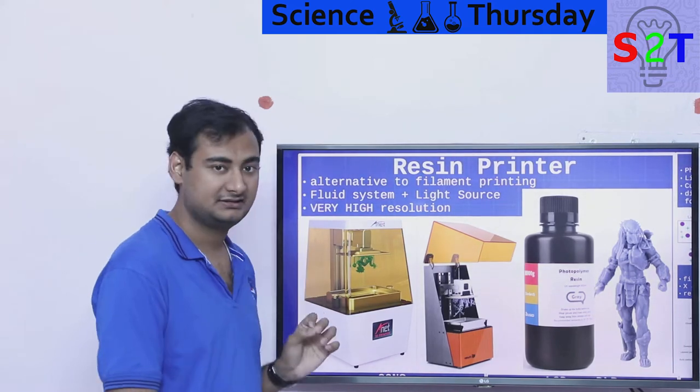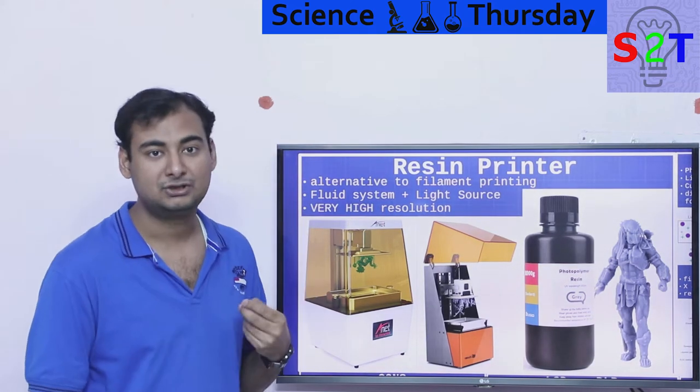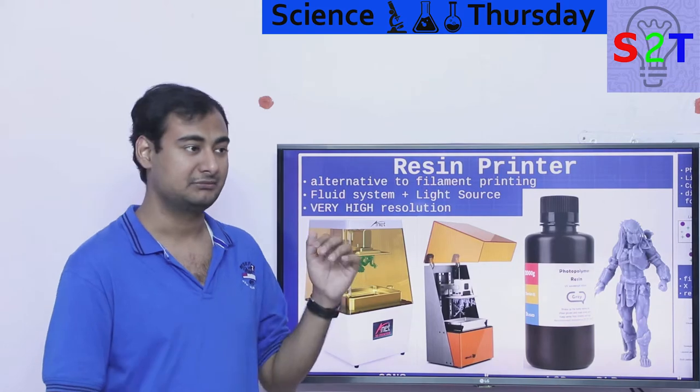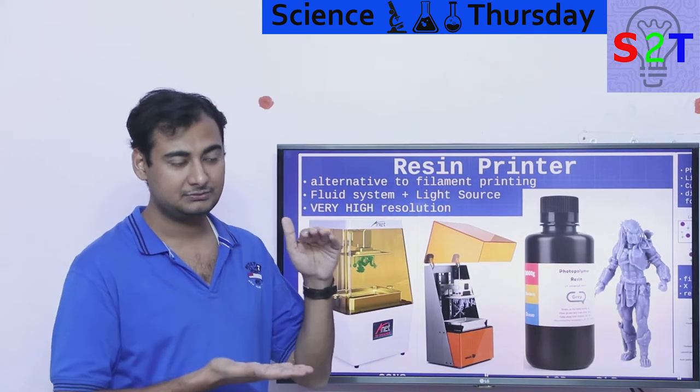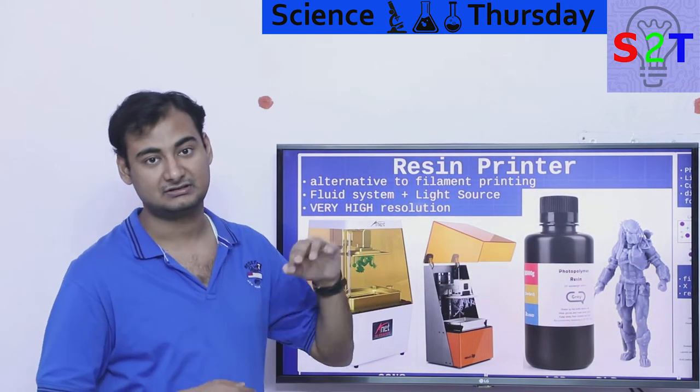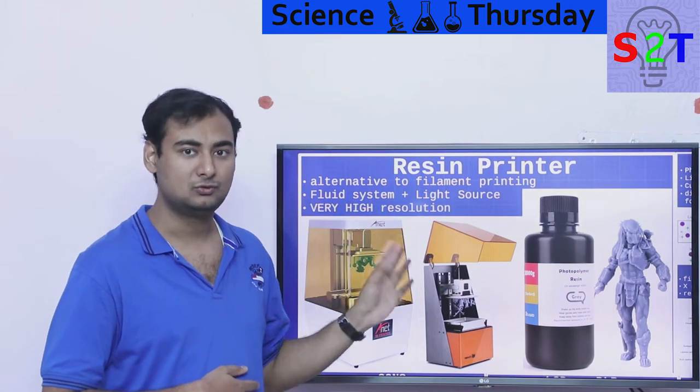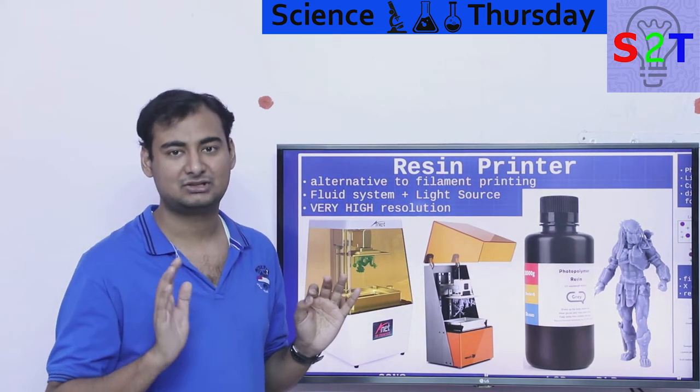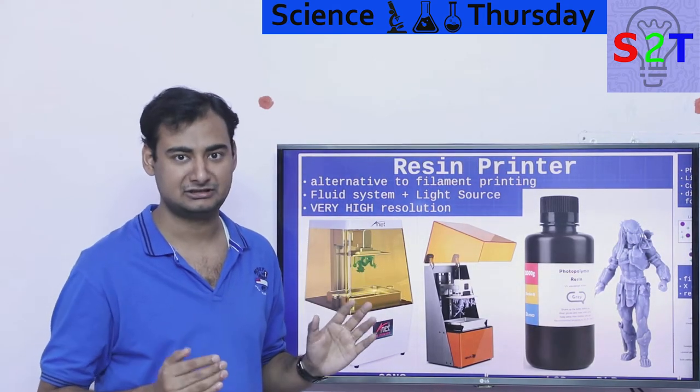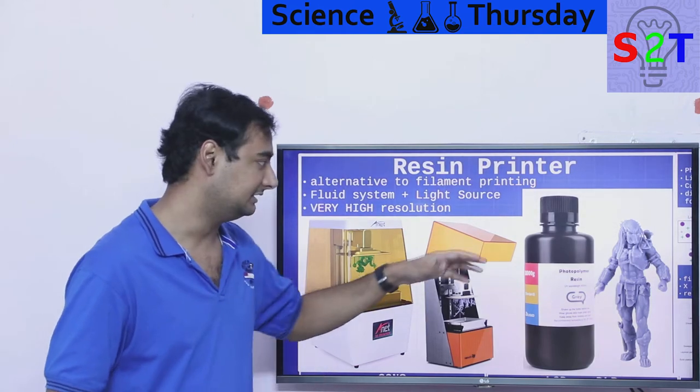And it does produce a very high resolution product. Basically if you want to make an action figure, let's say you're going to print a Thor, now if you take a Thor print on this printer versus a filament printer, this would be so much better. Like you have to do a little bit of work in terms of painting and all that to make it really pop out.